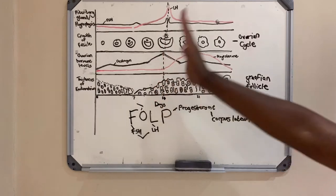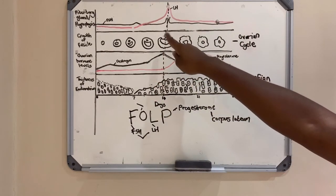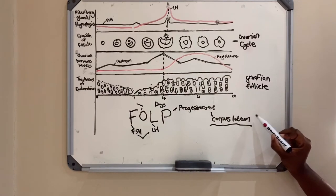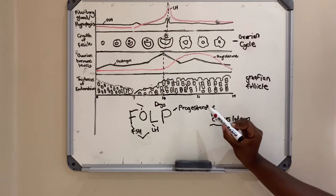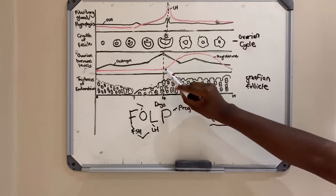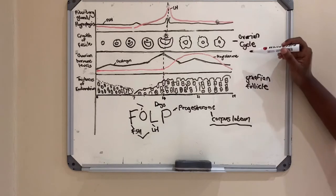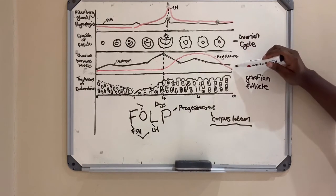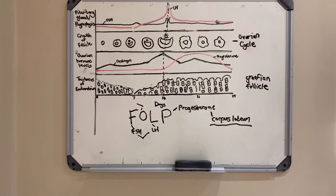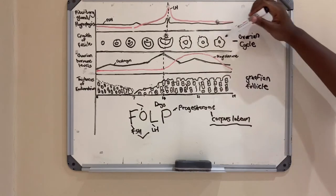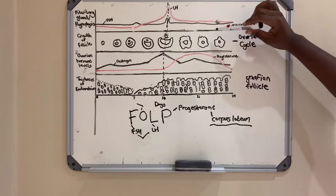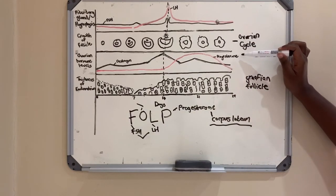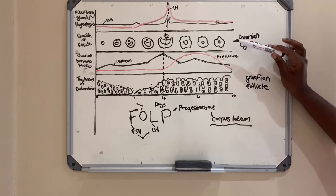After day 14, since the secondary oocyte is released, what remains is known as the corpus luteum. The corpus luteum is the thing that secretes progesterone, so that is why after day 14 progesterone increases. The role of progesterone is to maintain the pregnancy. If the female doesn't get pregnant, then the levels of progesterone will decrease as shown on this diagram. Also, the corpus luteum disintegrates if fertilization doesn't occur.